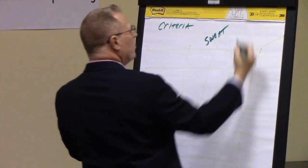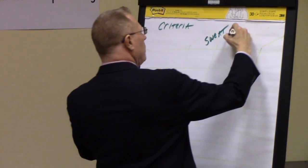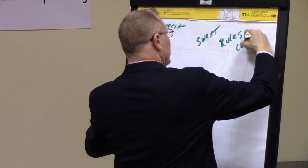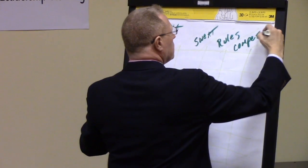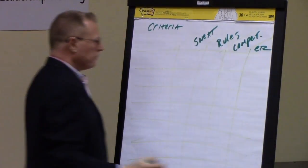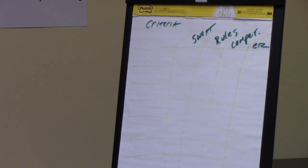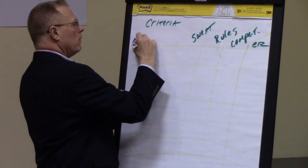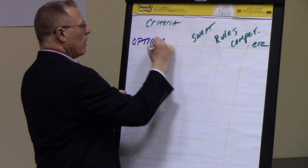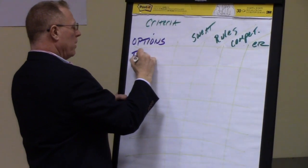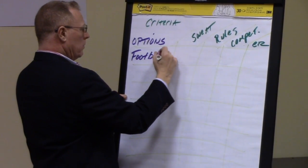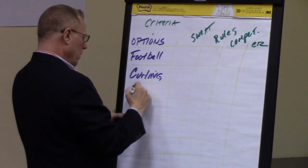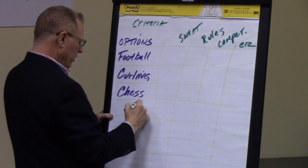So here, let's suggest we have criteria. Some of the criteria as to what we deem important to a sport might be sweat — the amount of sweat — rules, competition, etc. Here we need to take our options. Options in this case would be examples of sports, and some examples might be football, curling, and chess, etc.